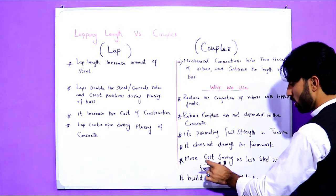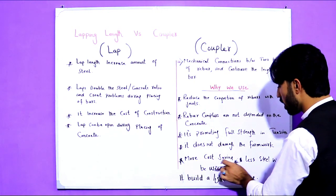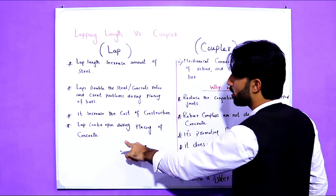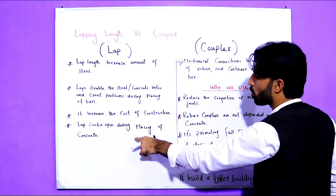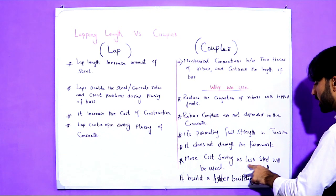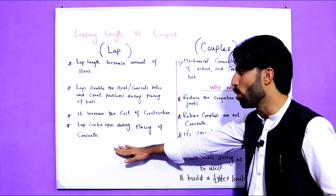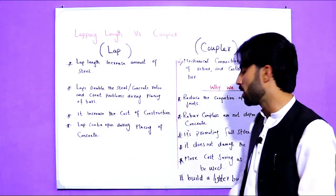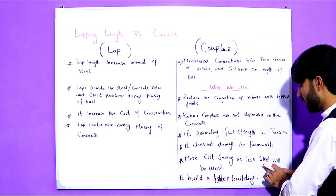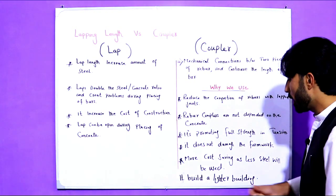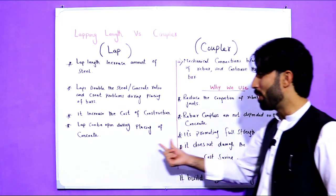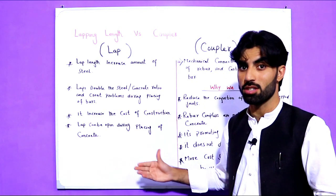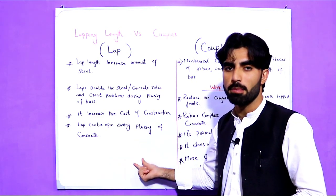Coupler offers more cost saving because less steel is used. Lapping cannot save the cost of the project because with overlapping we use more steel bars — one bar overlaid on another — increasing the amount of steel. With coupler, less steel is used. The last point is that coupler builds a lighter structure, but lapping builds a heavier structure because extra bars are added, making the overall structure heavier.